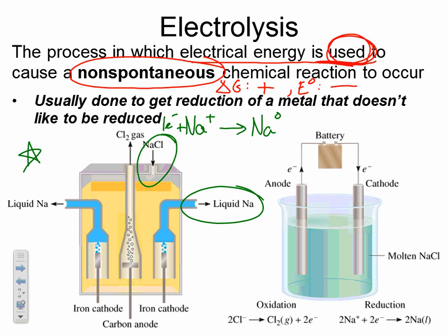Sodium does not want to gain an electron. Sodium wants to stay in its +1 state. But if you want to build up a supply of highly flammable and explosive sodium metal, then by all means use an electrolytic cell and get this non-spontaneous reduction of sodium to occur.